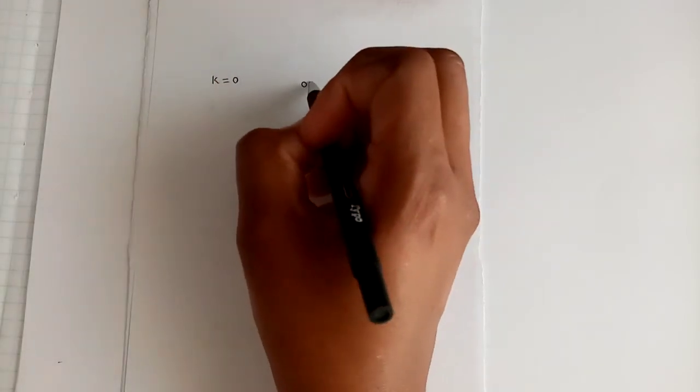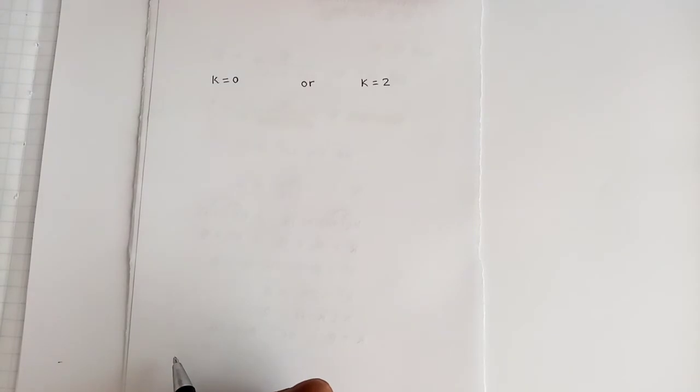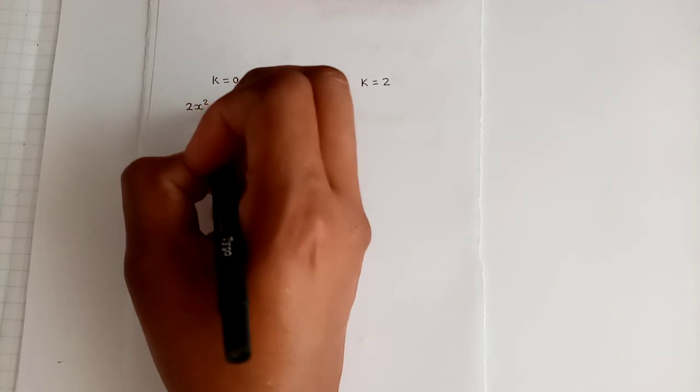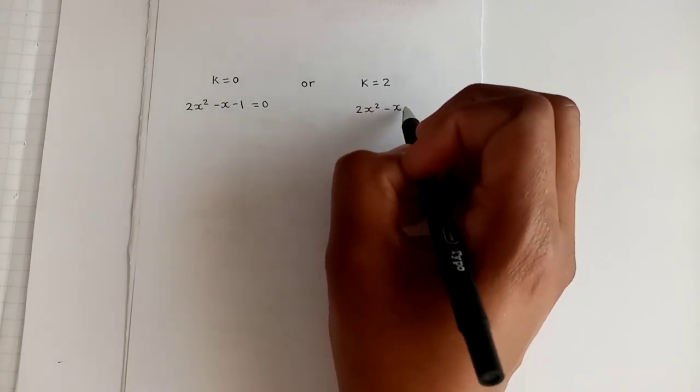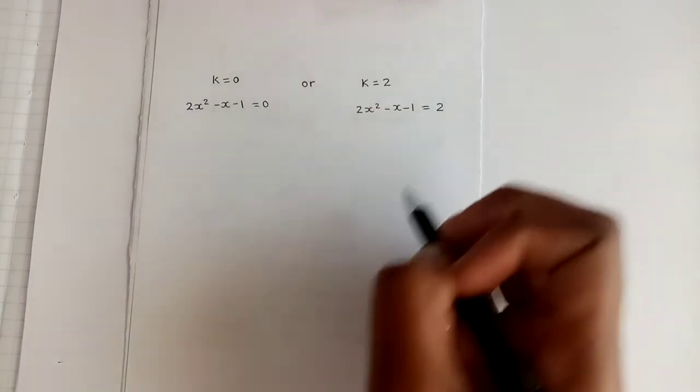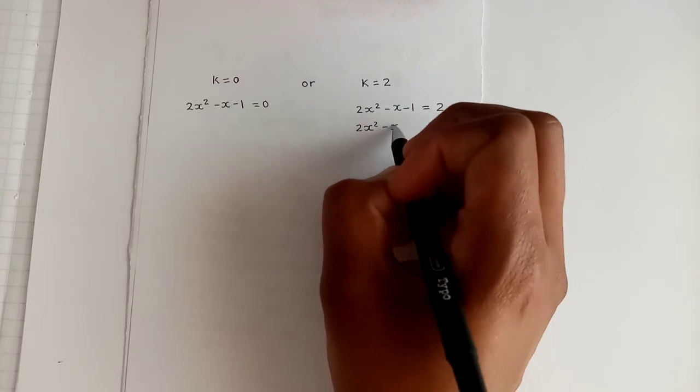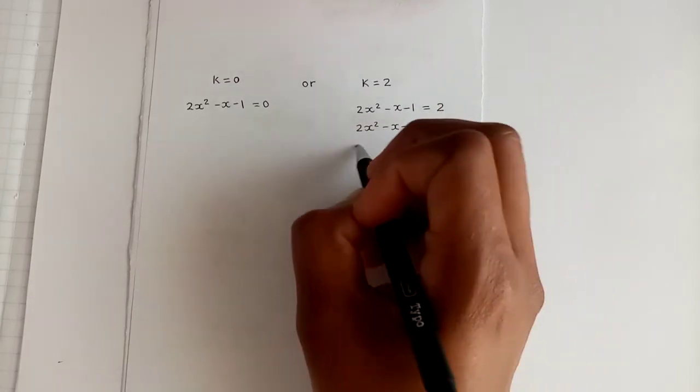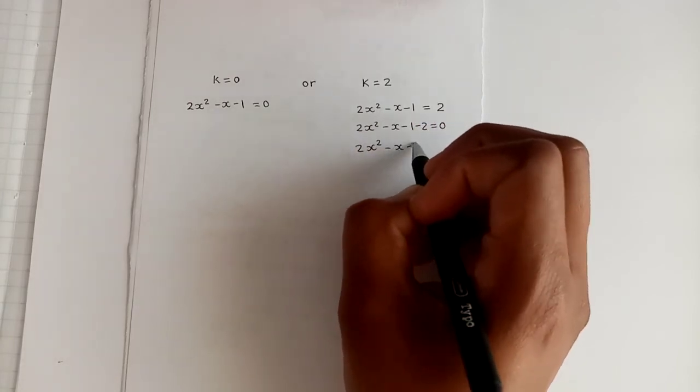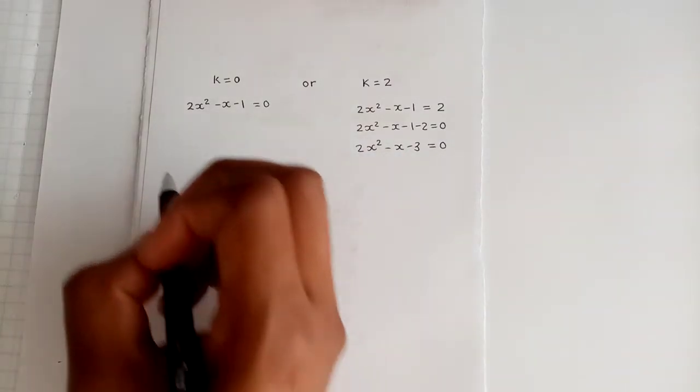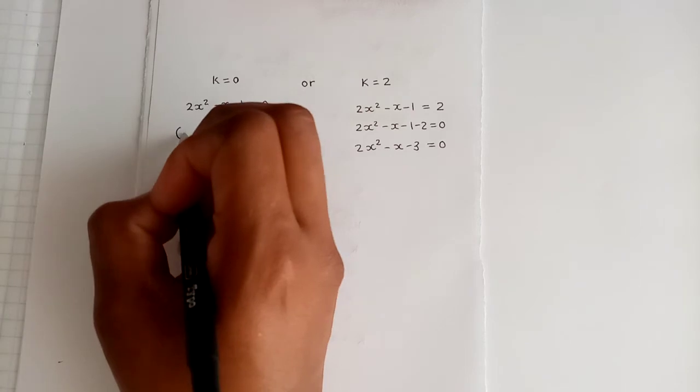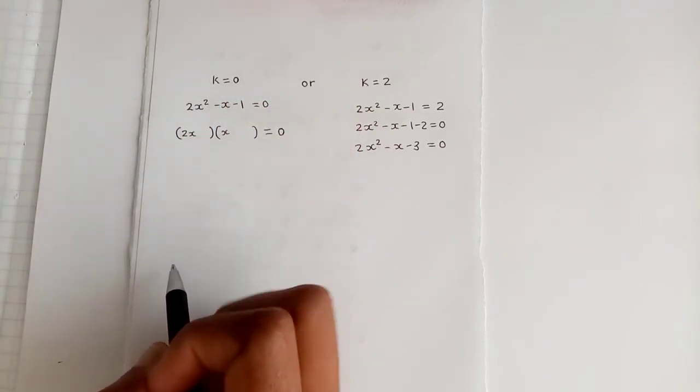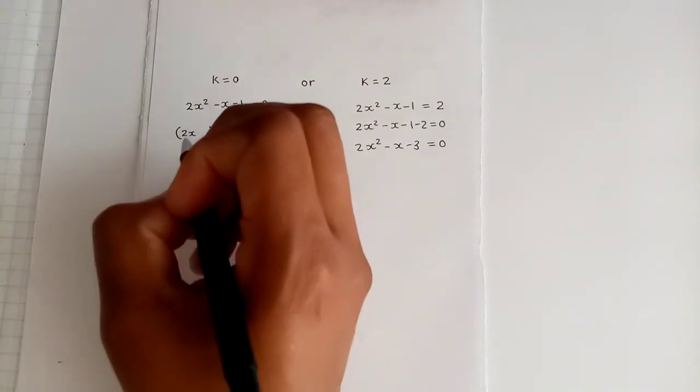So we're going off from the last step of k is equal to zero or k is equal to two. Okay, so that's where we ended off. Now we're going to replace our k. Our k is a 2x² - x - 1 equal to zero, and also on this side, 2x² - x - 1 equal to 2. Obviously we're going to have to move that 2 back to the left-hand side, and then ultimately we have to factorize 2x² - x - 3 equal to zero. Okay, so let's start on this side, let's factorize into two brackets.